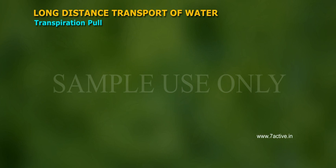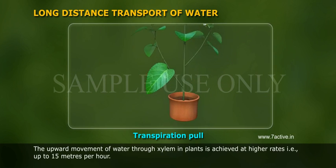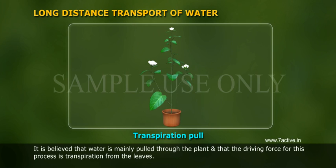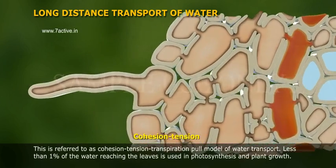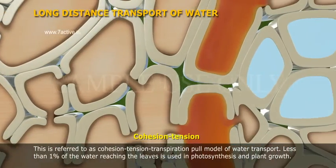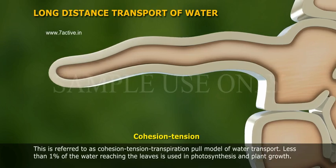Transpiration pull. The upward movement of water through xylem in plants is achieved at higher rates, up to 15 meters per hour. It is believed that water is mainly pulled through the plant, and that the driving force for this process is transpiration from the leaves. This is referred to as the cohesion-tension transpiration pull model of water transport.